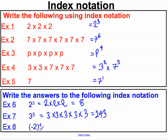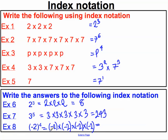And the last one: minus two is our base to the power of four. So that means we're multiplying minus two by minus two by minus two by minus two — the base minus two multiplied by itself four times. Be careful with negatives here. Negative two multiplied by negative two is four, and negative two times negative two is four, and four times four is 16. And there is a brief introduction to simple index notation.